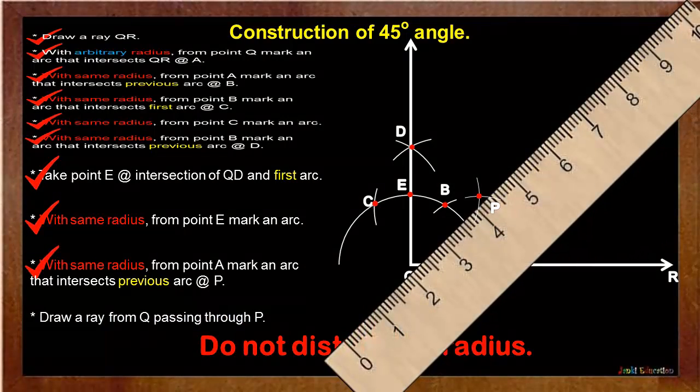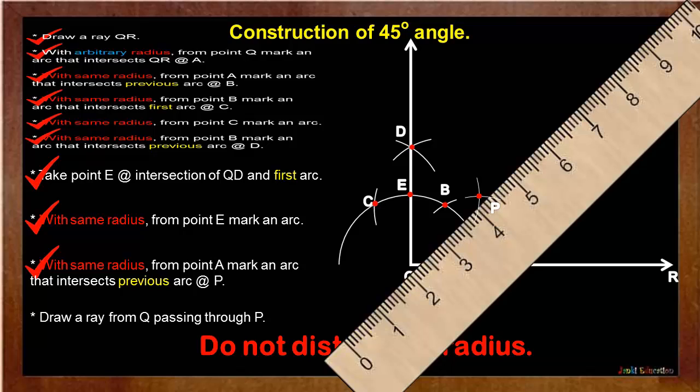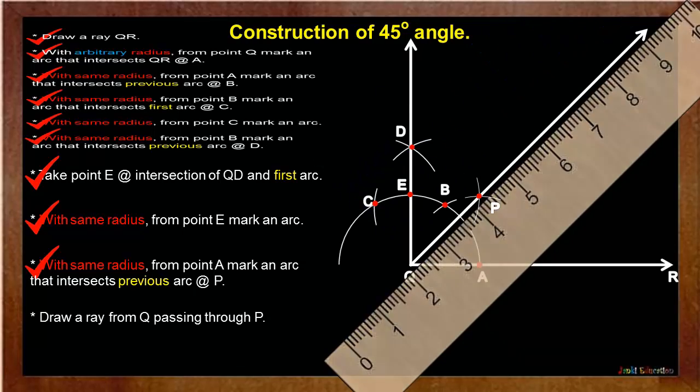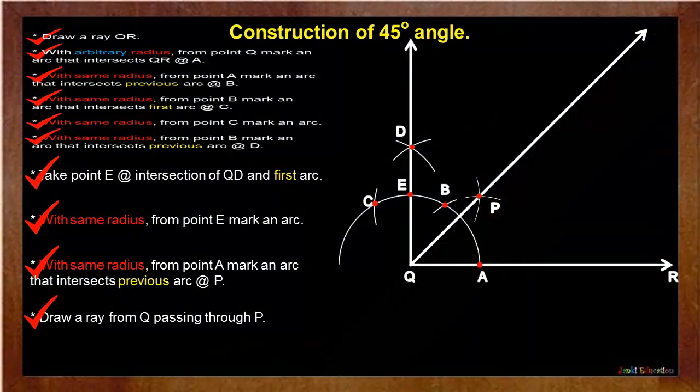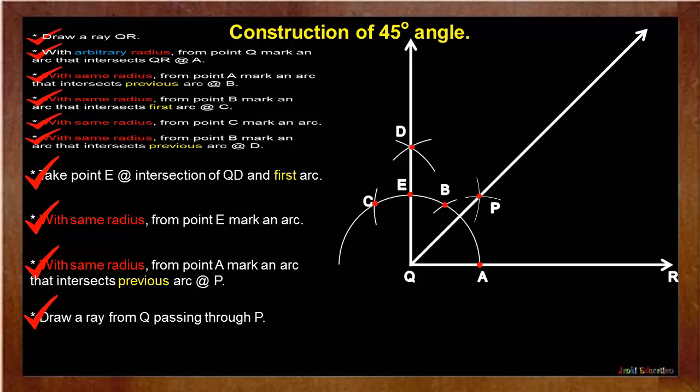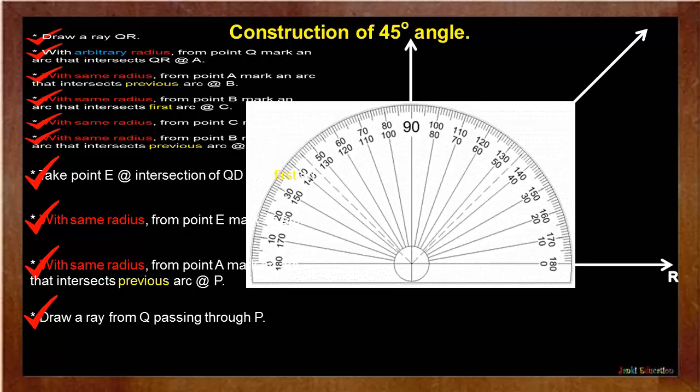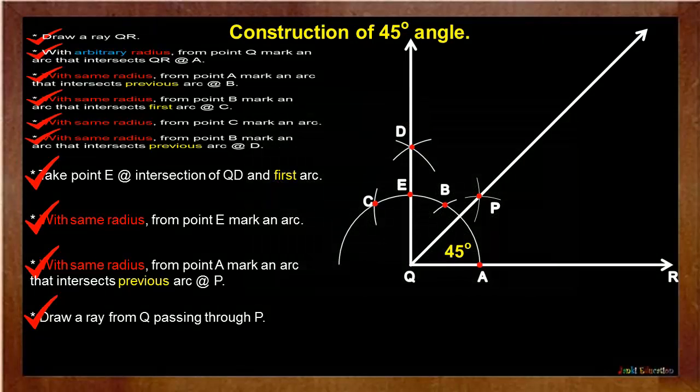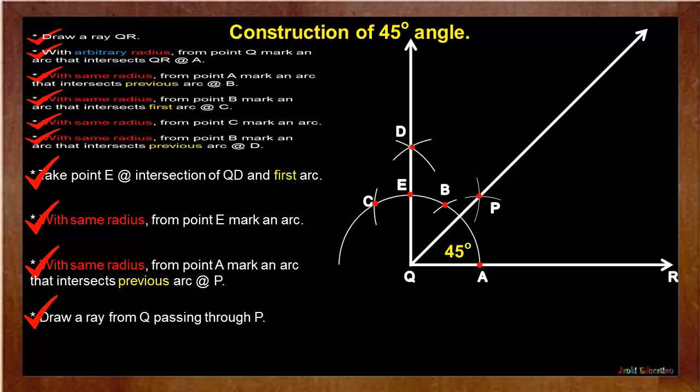Now join QP by drawing a ray from Q passing through P. So here angle PQA is our 45 degree angle and to prove it practically, we can use geometrical protractor where you can see the angle is 45 degree. So like this with the help of straight edge and geometrical compass we can construct 45 degree angle.